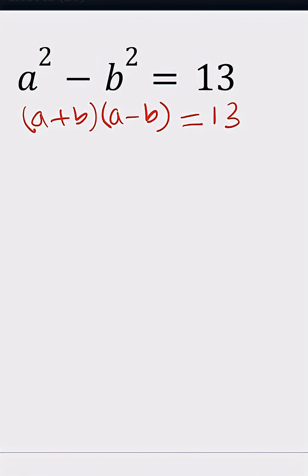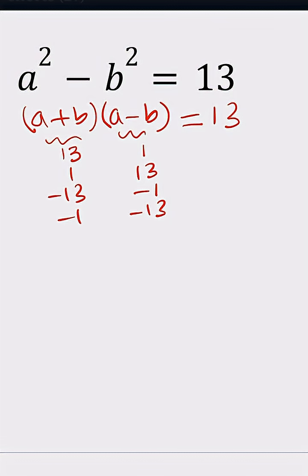What is so special about 13? It's a prime number. So it can only be factored in certain ways: you can set it equal to 13 and 1, because 13 times 1 works. Or you can say 1 and 13. Or negative 13 and negative 1, or negative 1 and negative 13. Those are all the possibilities.